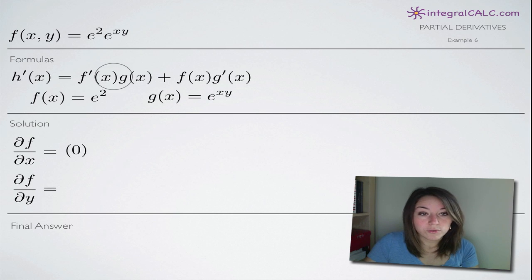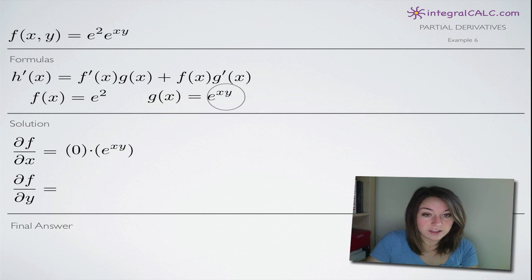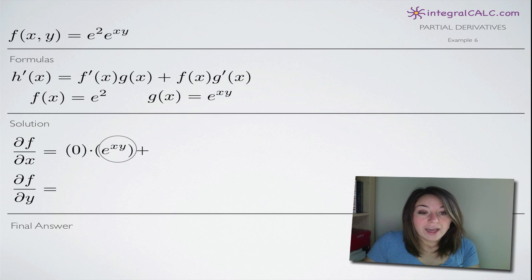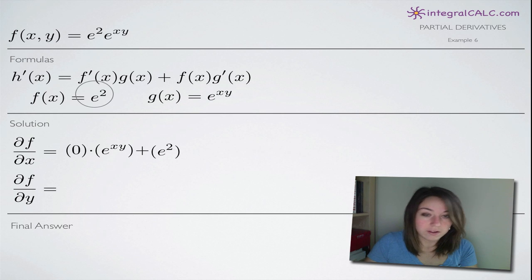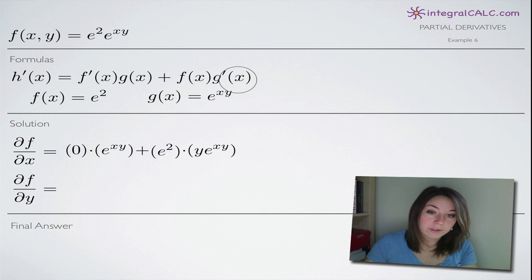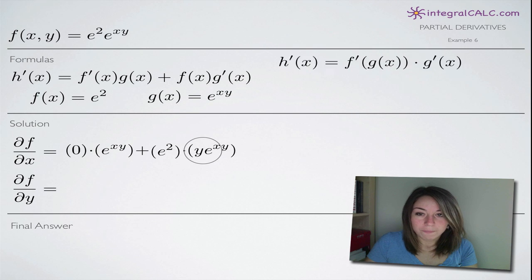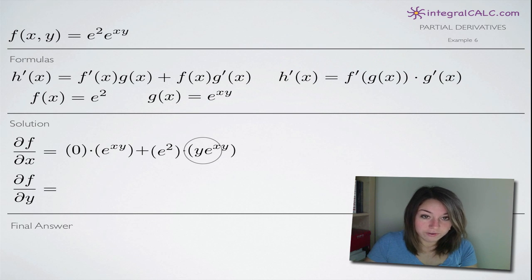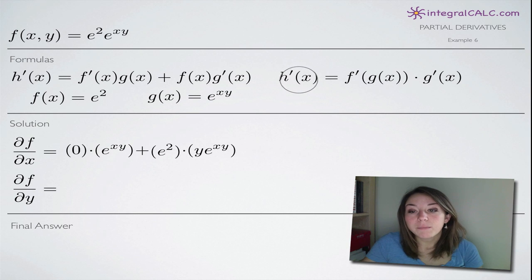Our product rule formula tells us we need to add in g of x, so we take e to the xy and multiply it in. Then we add f of x — this e squared, untouched — and now we need to add in the derivative of g of x. That is the most complicated part of our problem because we need to use chain rule to get the derivative of g of x. If you have any trouble with either product rule or chain rule, you can look at those sections on my website.